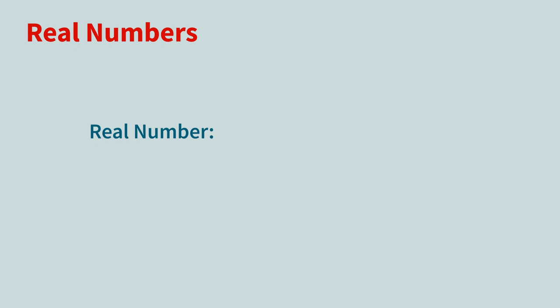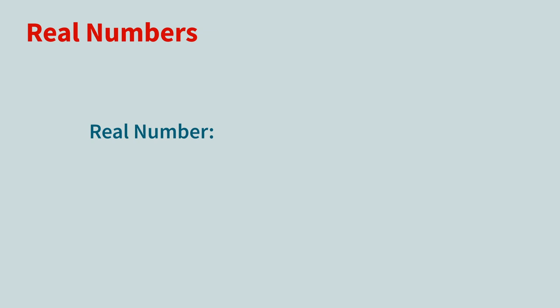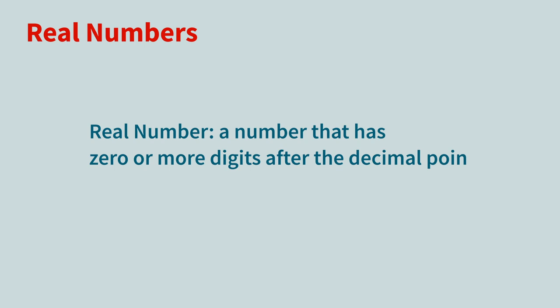A real number is any number that has zero or more digits after the decimal point. While you can type as many digits as you need, the output is typically truncated. You can see all of the digits by using the function fullform.